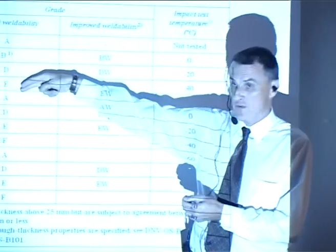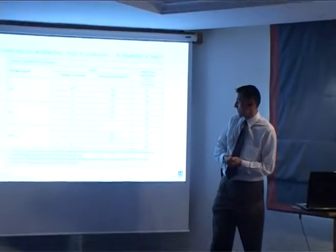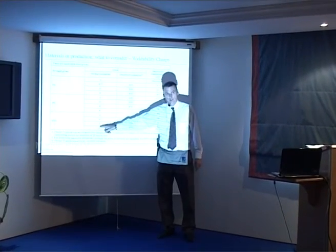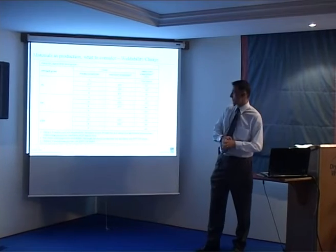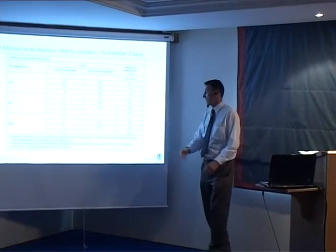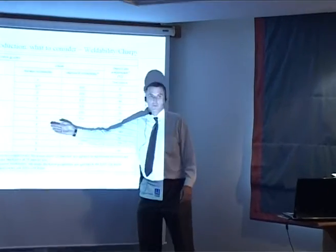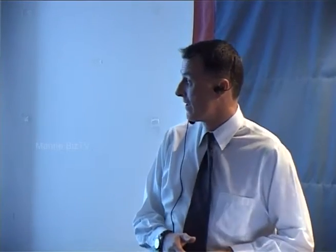The further down the alphabet you get, the harder it is to weld. When you get down to F grade, preheat is essential, good quality control is essential — it's very difficult to weld. A-grade stuff is much more forgiving for you. So if you're dealing with a plate, recognize the grade, and recognize that if it's an E or F grade plate, it means something special.